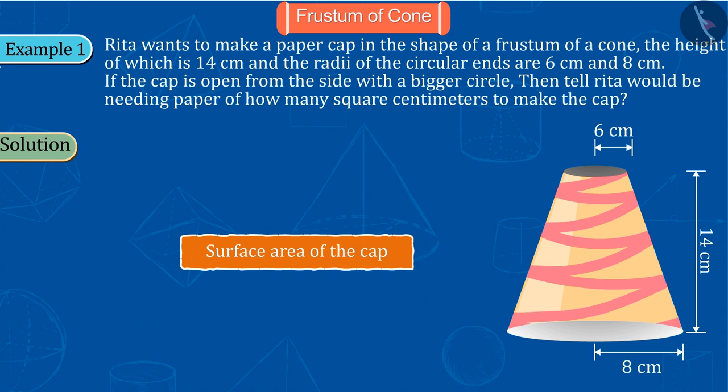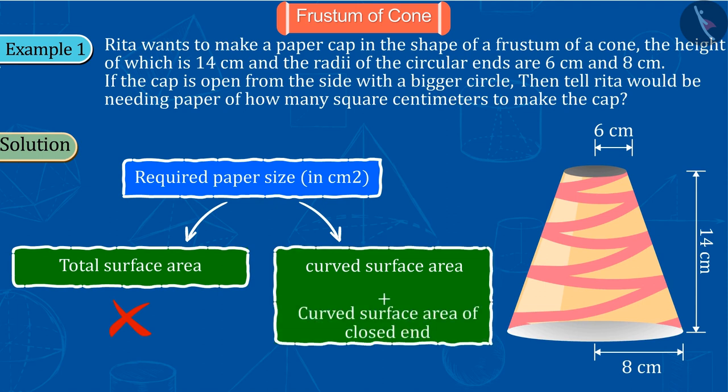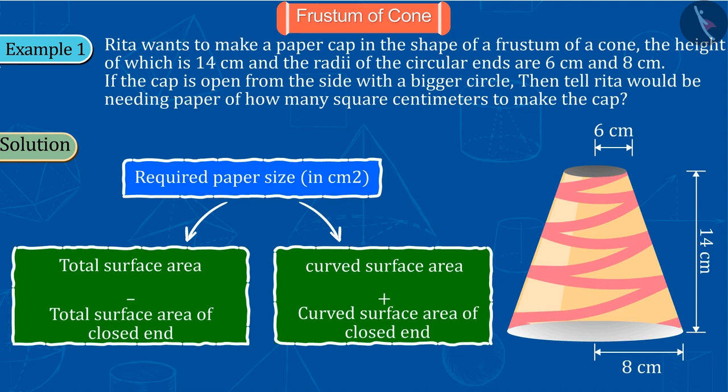Absolutely correct. For this we have to find the surface area of the cap. Because the cap is open from the bottom and closed at the top, we will not find the total surface area. Rather, we will add the area of the closed end to the curved surface area. The area of the open end will be subtracted from the entire surface area.